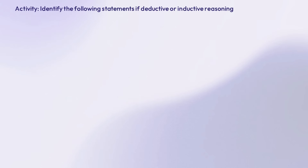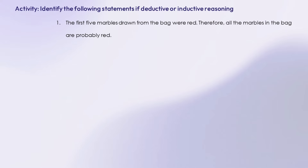Alright, let's put what we've learned to the test. I'm going to read a series of statements, and I want you to think about whether each one represents deductive or inductive reasoning. Number 1: the first 5 marbles drawn from the bag were red. Therefore, all the marbles in the bag are probably red.